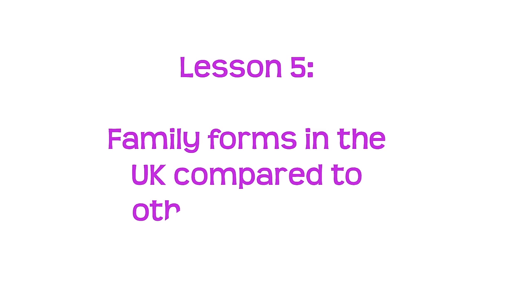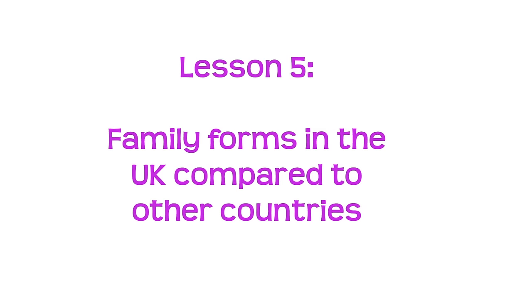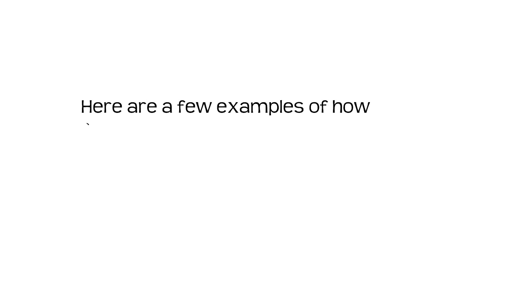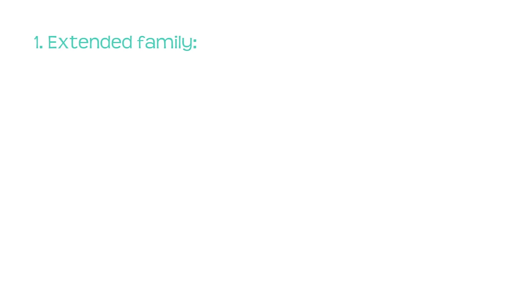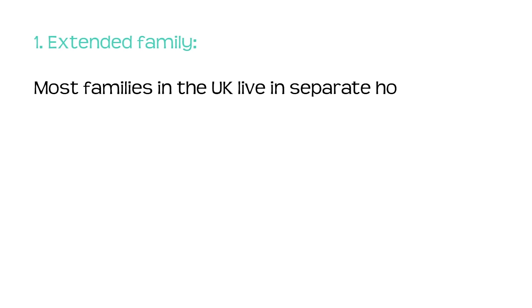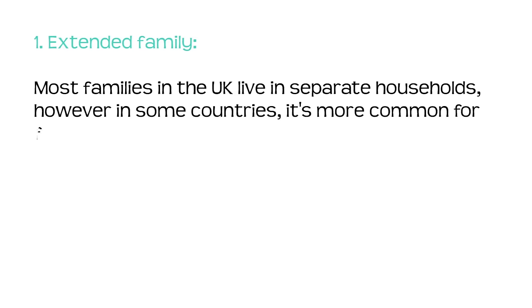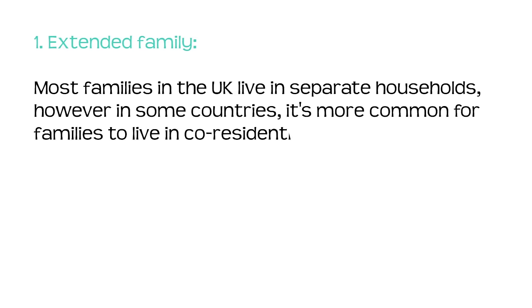Lesson five: family forms in the UK compared to other countries. Here are a few examples of how family forms differ between the UK and other countries. Most families in the UK live in separate households. However, in some countries, it's more common for families to live in co-residential arrangements.